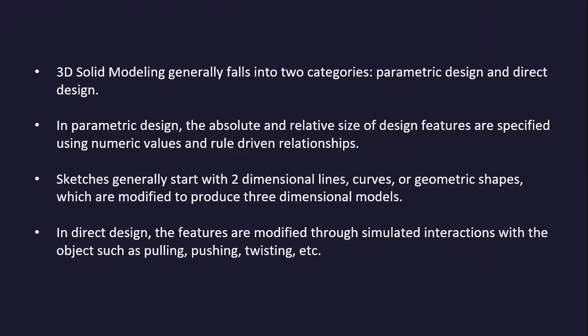3D solid modeling generally falls into two categories: parametric design and direct design. In parametric design, the absolute and relative size of design features are specified using numeric values and rule-driven relationships; sketches generally start with 2D lines, curves, or geometric shapes which are modified to produce 3D models. In direct design, features are modified through simulated interactions with the object, such as pulling, pushing, or twisting.